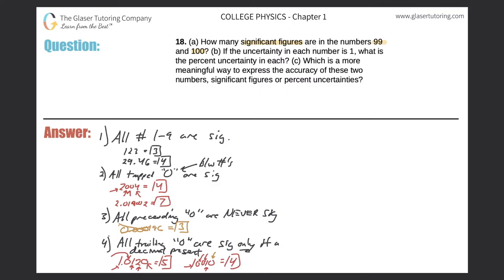Now let's apply these rules to our numbers. For 99, both nines are significant, so this number has two significant figures. For 100, the textbook says it could have one, two, or three significant figures — that depends on where the uncertainty lies. Since letter A gives us no information about uncertainty, we fall back on rule four. Written without a decimal, there is only one significant figure. If a decimal were placed at the end, then it would be three.